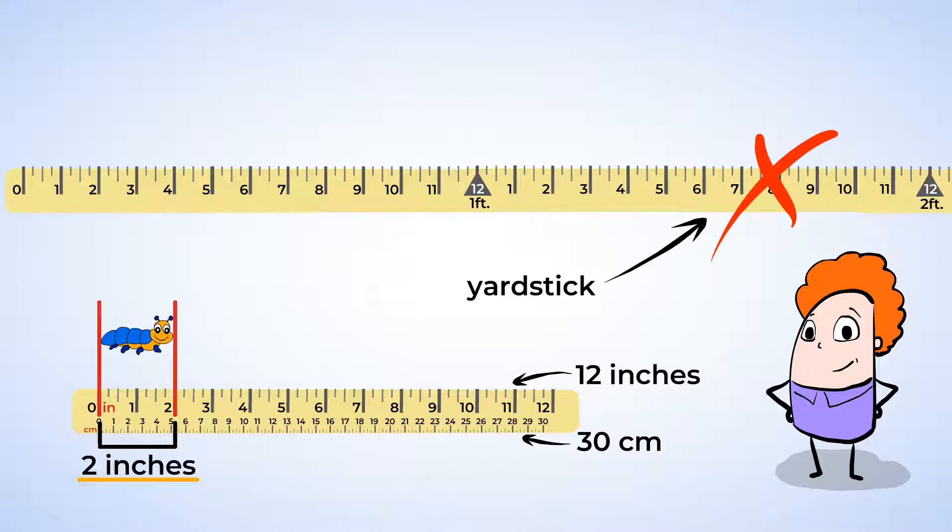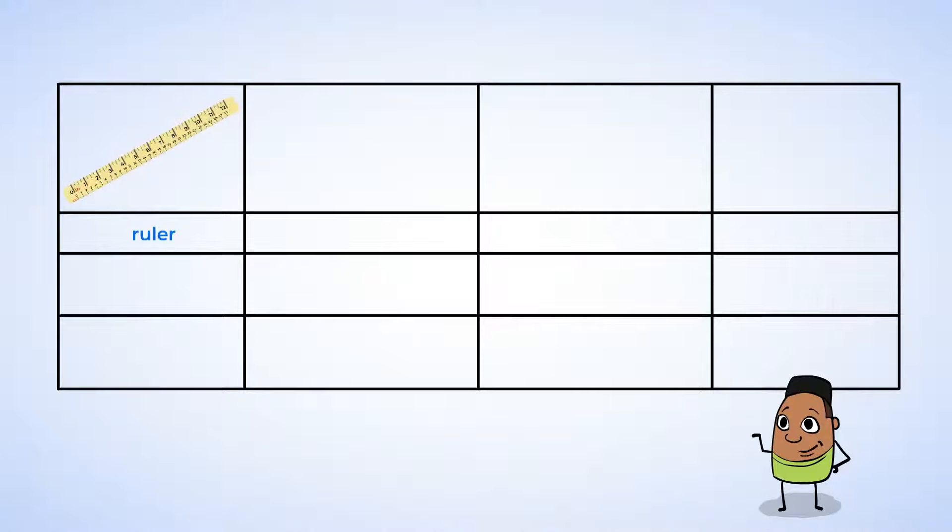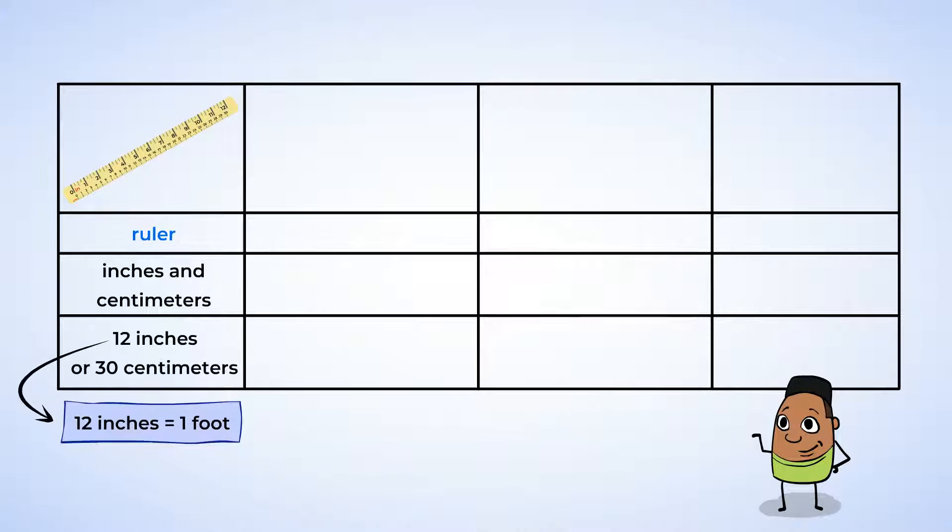But before we find the next backyard object to measure, let's talk a little about different measuring tools. You already know the ruler, which measures in inches or in centimeters on the opposite side, so you can use both. It's 12 inches long on one side and 30 centimeters long on the other side. And since 12 inches is the same as one foot, you can also say that a ruler is one foot long.